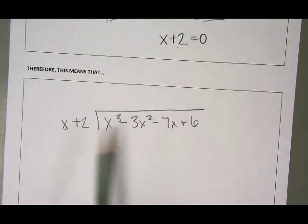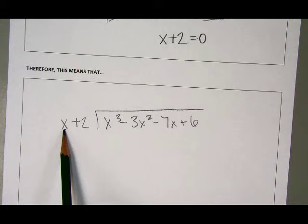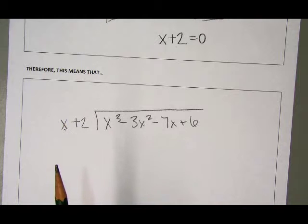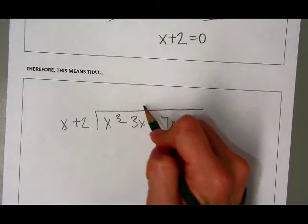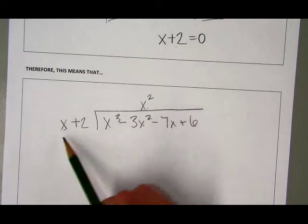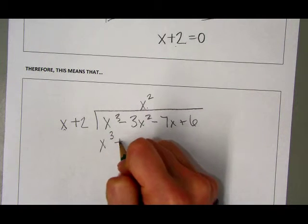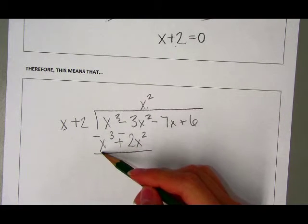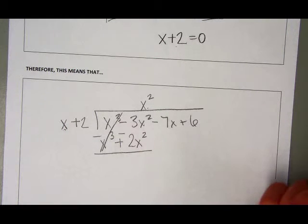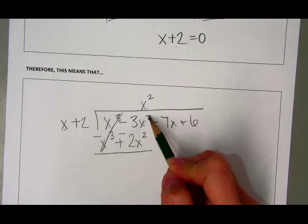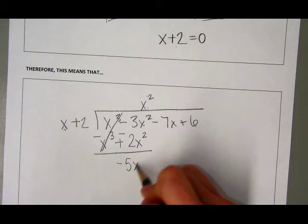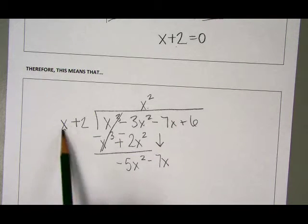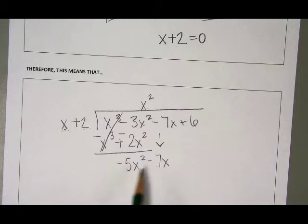When I do the long division, x is my leading value on the outside and x cubed is my leading value on the inside, so I need x squared when I multiply them together. x squared goes above my x squared column. x squared times x gives x cubed, plus 2x squared. Subtracting these values — no double negatives — those cancel out to give me zero. Negative 3x squared minus 2x squared gives me negative 5x squared, minus 7x. I bring that down.